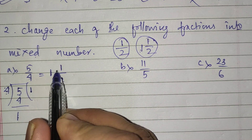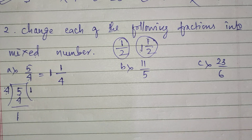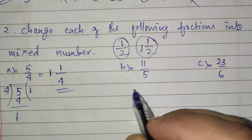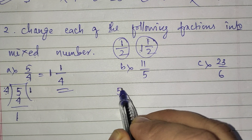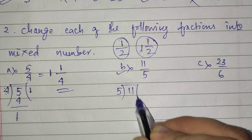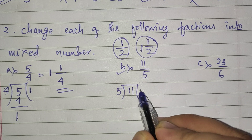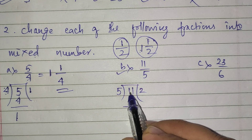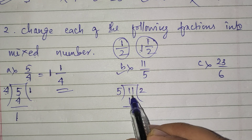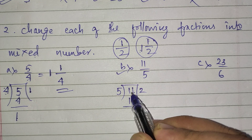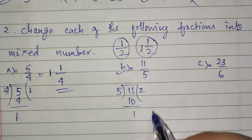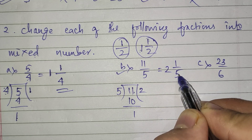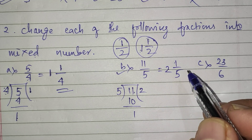So for 5 by 4: 4 ones are 4, and 5 minus 4 is 1. So it becomes 1 whole 1 by 4. The quotient is written as the whole number, the remainder is the new numerator, and the divisor stays as the denominator. For part B, 11 by 5: 5 twos are 10, and 11 minus 10 is 1. So it is 2 whole 1 by 5.